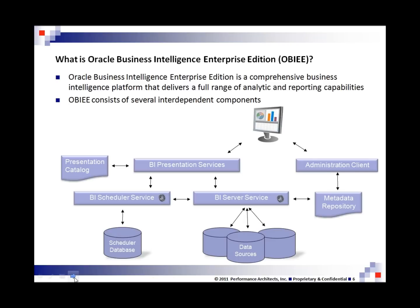The third component of Oracle Business Intelligence is the BI scheduler server service, which is a scheduling, alerting, and delivery engine that sends multiple types of content to mail and mobile devices.